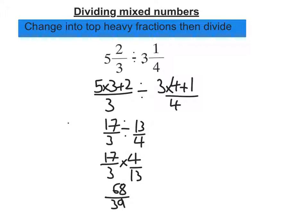We check if anything cancels - it doesn't. Then we write it as a mixed number: 68 divided by 39 goes in once, with 29/39 left over. So the answer is 1 and 29/39.